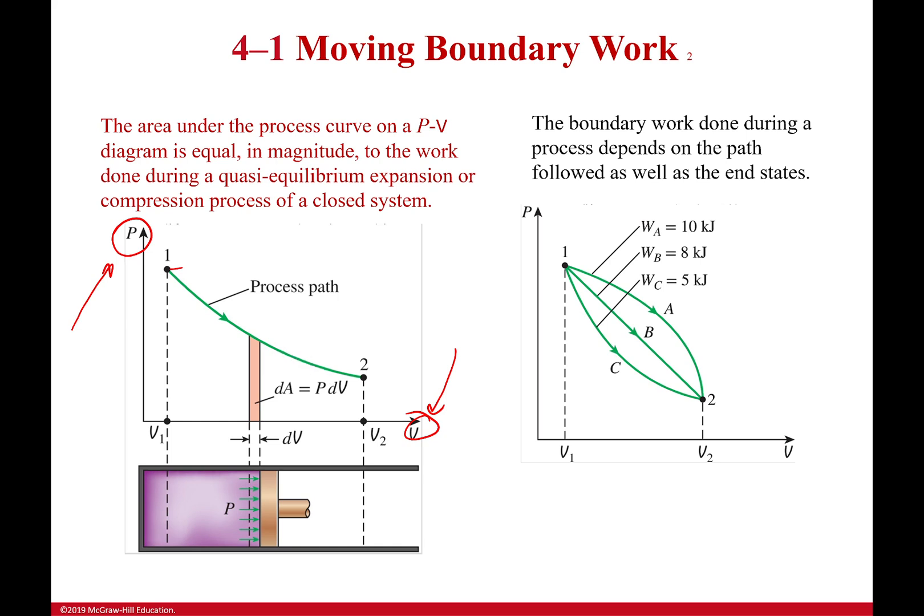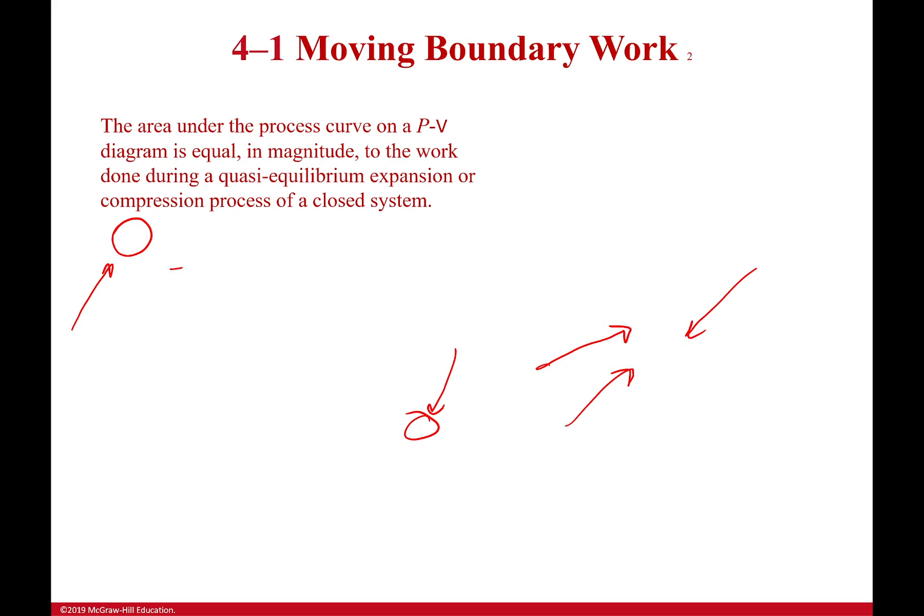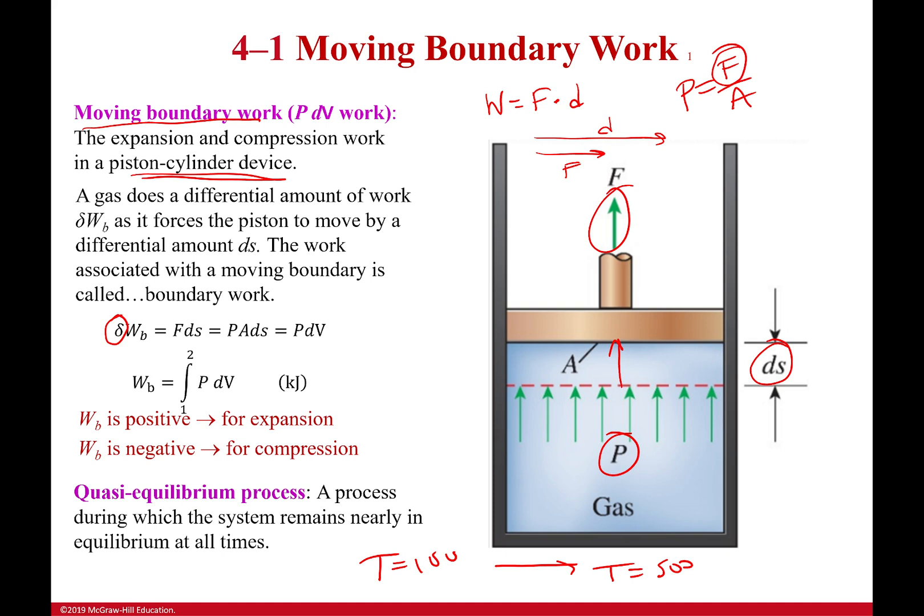Now the second thing we learn is that if I have a process path like this and the path of the process matters, then I'm going to have to be careful about that. In this case I produced 10 kilojoules of work, in this case I produced five, in this case I produced eight. How I got from one to two really matters. Interestingly, this little symbol right here—when you see a delta like that—that means it is path dependent. If you see one that looks like this, it's not path dependent—path independent for a lot of things. That's actually something that's helping you out later on.